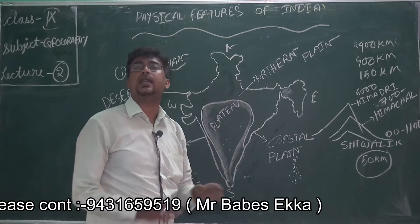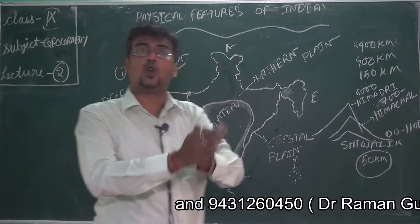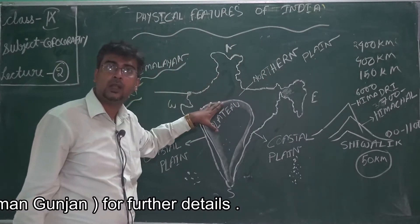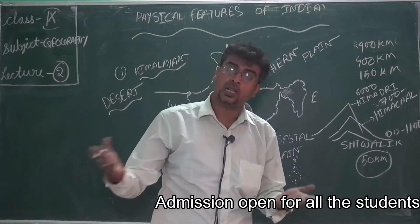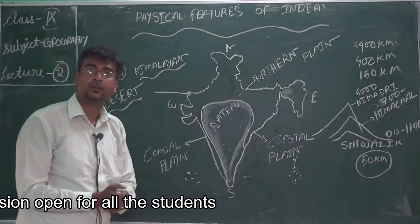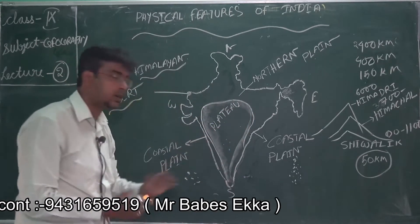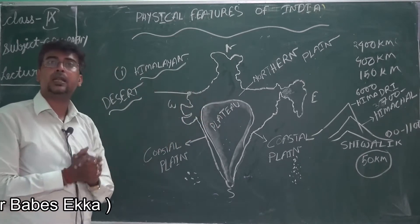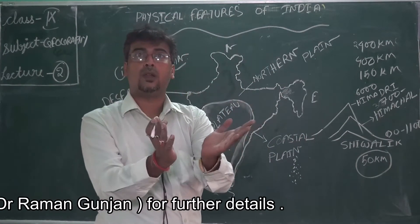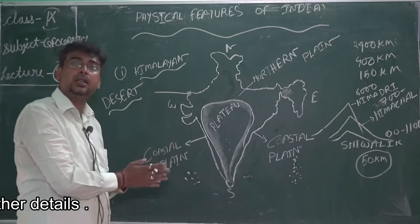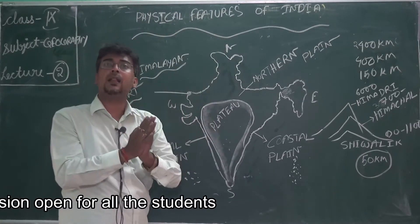We call India a subcontinent. Why? Because different types of physical characters which we find all over the world, we also find in our India — like mountains, deserts, coastal sea beaches, plateau areas, mountain areas, and also islands. All physical characters are present in our India, so with this chapter we talk about the Indian physical features, that means structural characters.